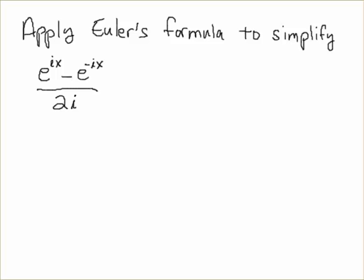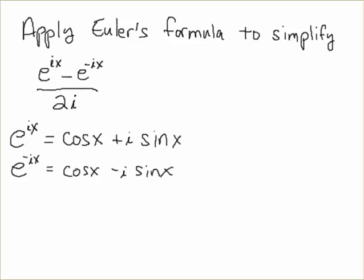So without further ado, here we go. I will write e to the ix equals cosine x plus i sine x. That is this term here on the left. Then e to the minus ix is the conjugate of that term: it's cosine x minus i sine x.